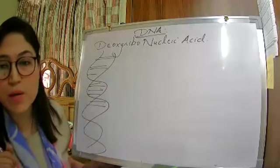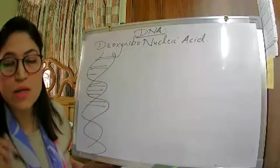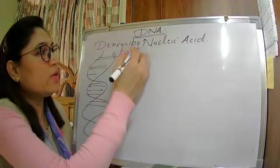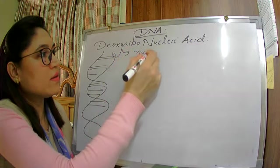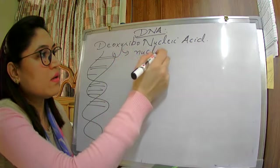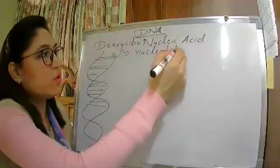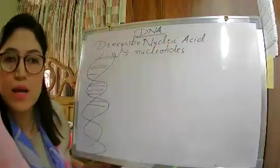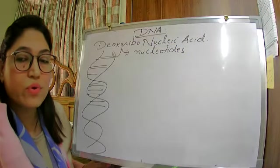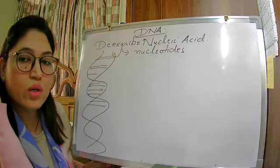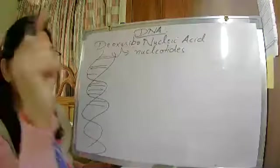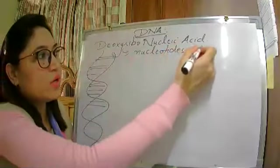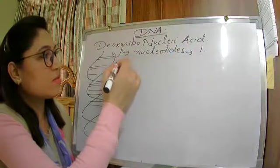What is DNA made up of? DNA is made up of repeating nucleotide units. If you look into the structure of one nucleotide, one nucleotide has three units.